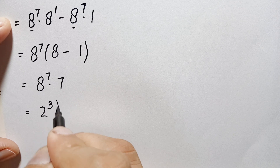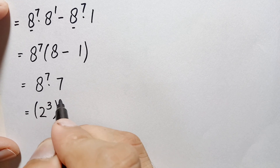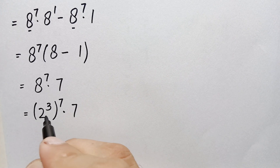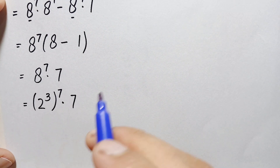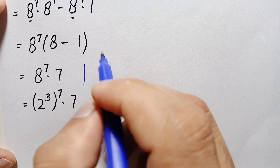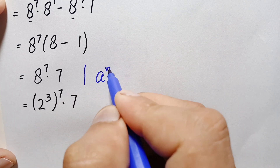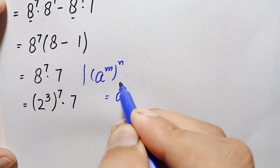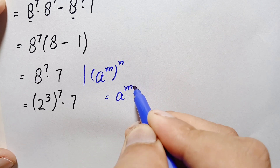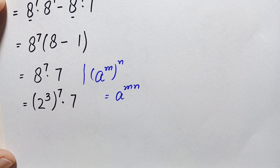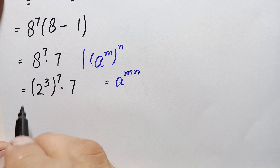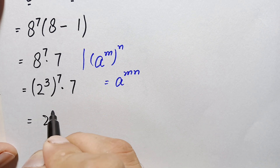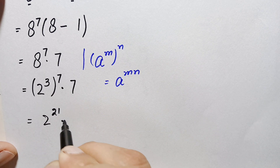Now we will change this 8 raised to power 7 into exponential form. We can write 8 as 2 cubed, because multiplying 2 three times gives 8. So we have 2 cubed, raised to power 7, times 7. Using the exponential identity (a^m)^n = a^(m×n), this becomes 2 raised to power 7 times 3, which is 2 raised to power 21, times 7.